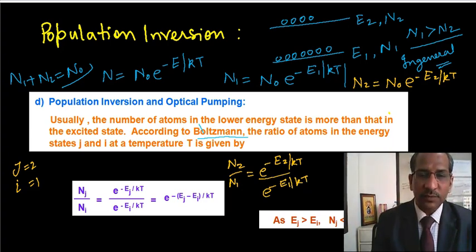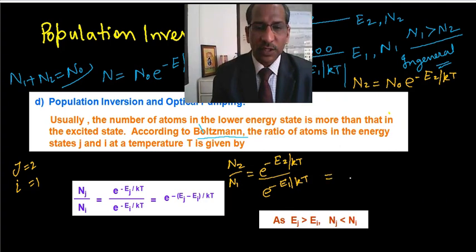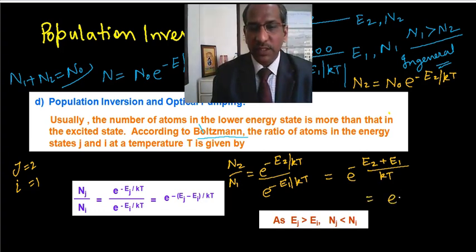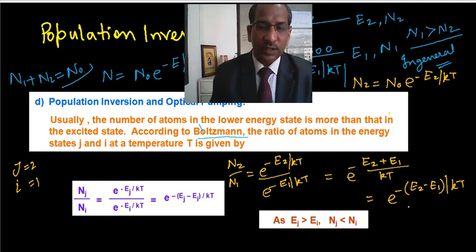So how will you write it? You can write it as e raised to power minus E2 plus E1 upon kT when we simplify it. So further you can write it as e raised to power minus, taking this minus common, E2 minus E1 upon kT. And you know that this E2 minus E1 is what? That is h nu, so you can put here h nu also.